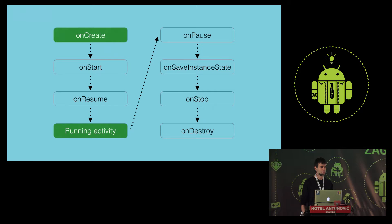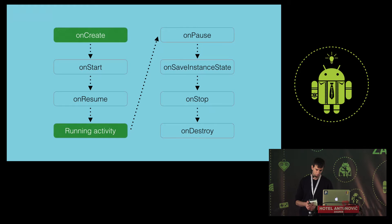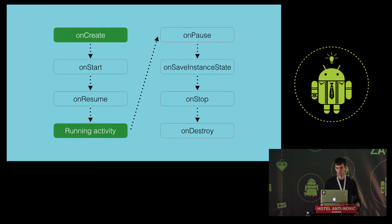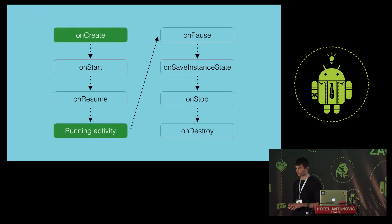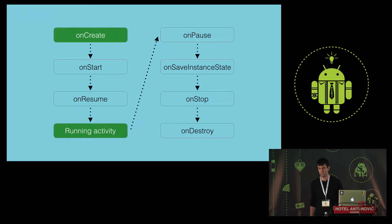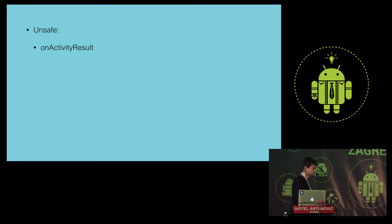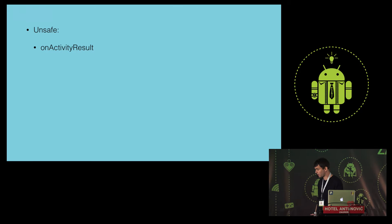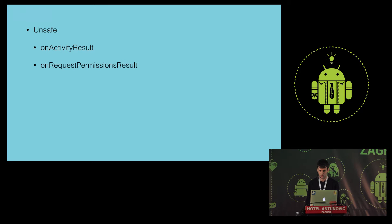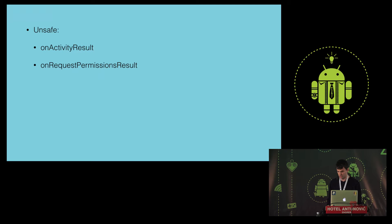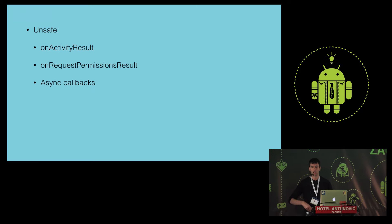When is it safe to commit transactions? In onCreate, which is part of the initial activity state. When the activity is fully resumed — specifically in onResumeFragments, not onResume. And in response to user interaction, because user interaction can only occur when the activity is resumed. Unsafe scenarios: onActivityResult (activity not yet fully resumed), onRequestPermissionsResult (Android M permissions callback), and very typically in async callbacks where data returns from the server at an arbitrary point in the lifecycle, possibly during onStop.